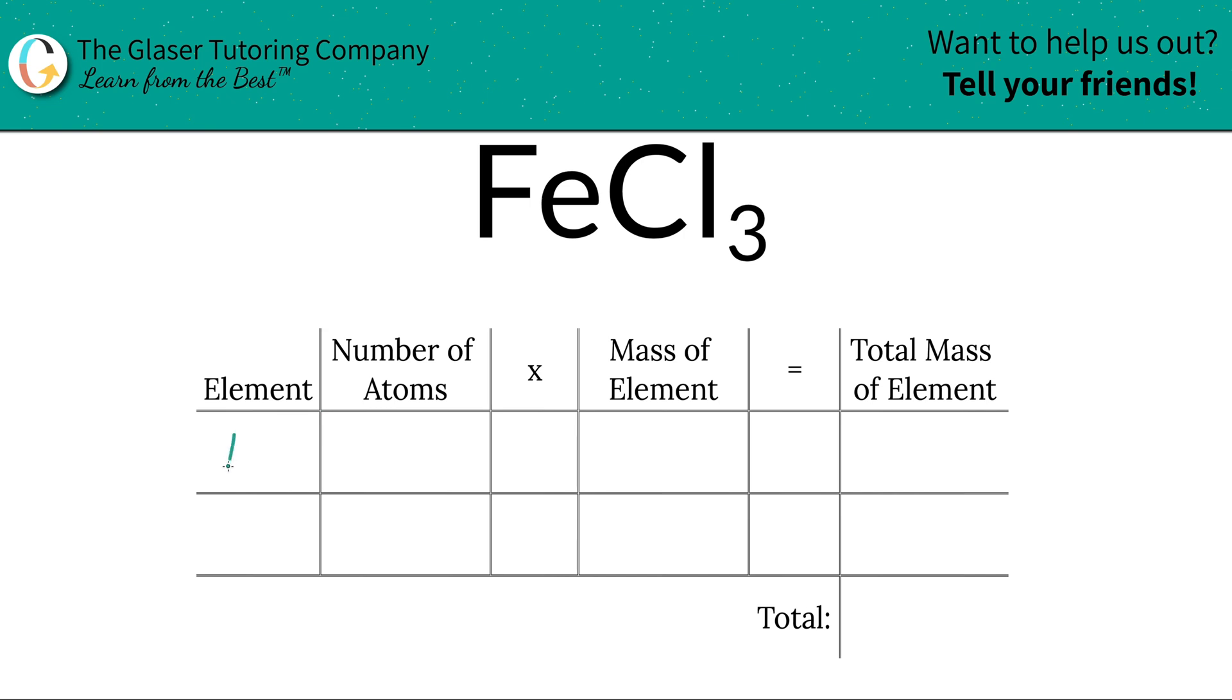So the first step of the process is to write down the elements that we see in the compound. So it's going to be Fe for iron and chlorine Cl. Next is then to write down the number of atoms. That's where the subscripts come into play. So if there's not a subscript there, you must write in a 1. And that means that there's one iron atom. For chlorine, it's going to be 3. There are 3 chlorine atoms.